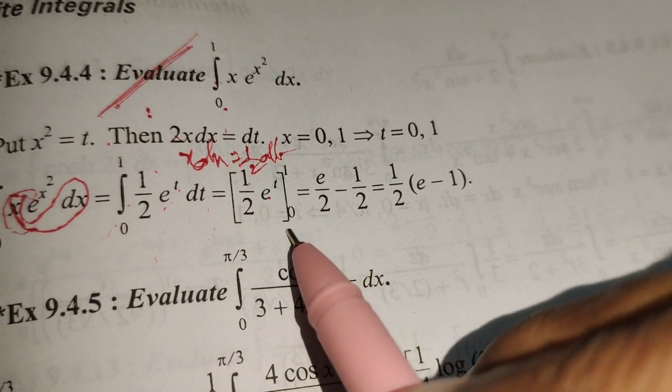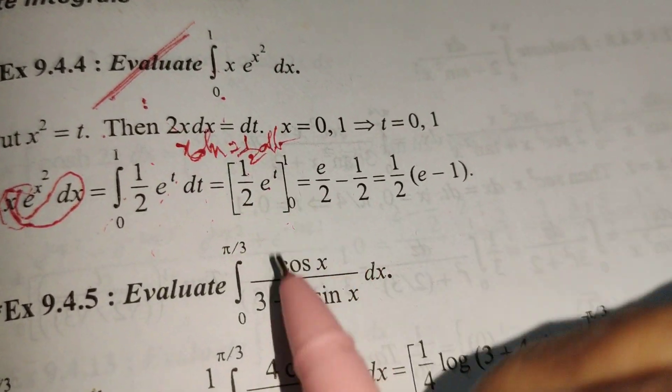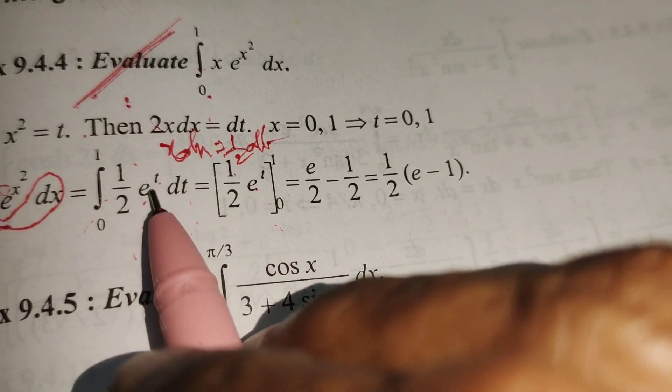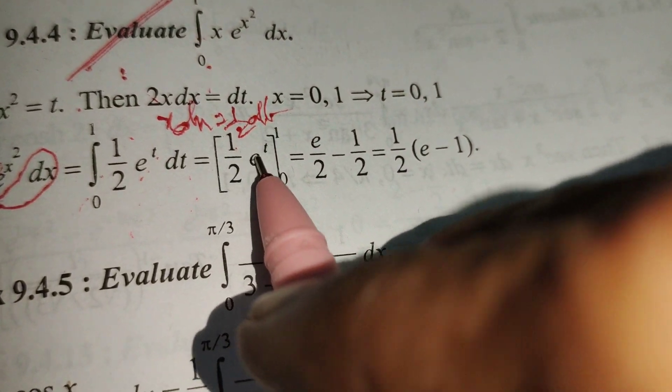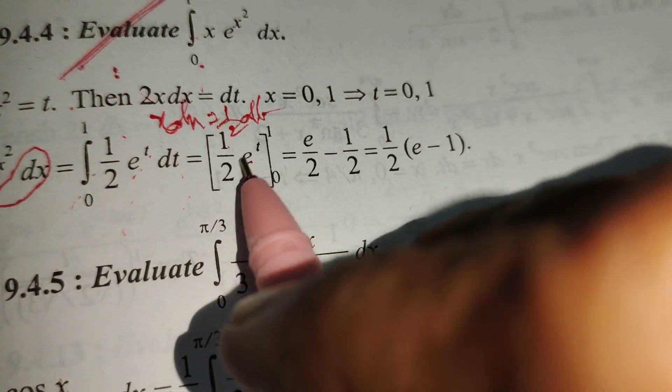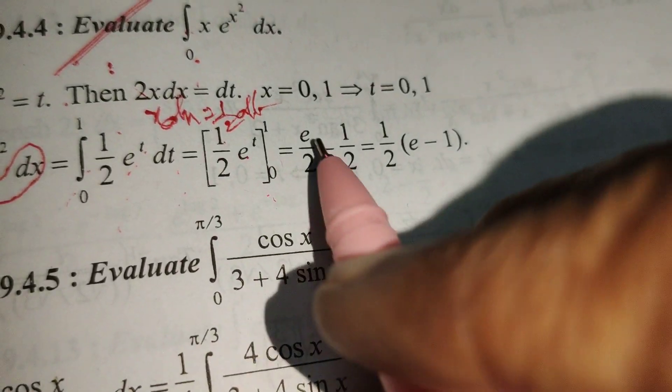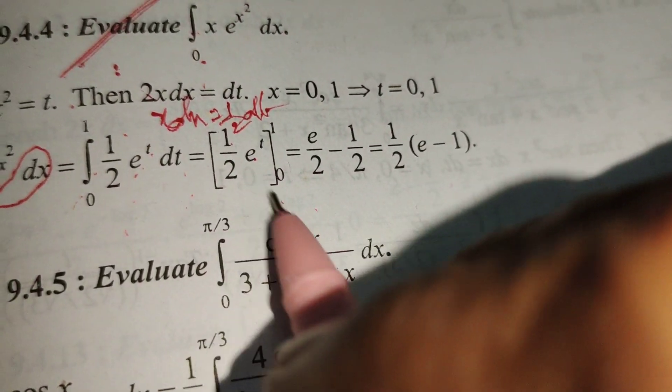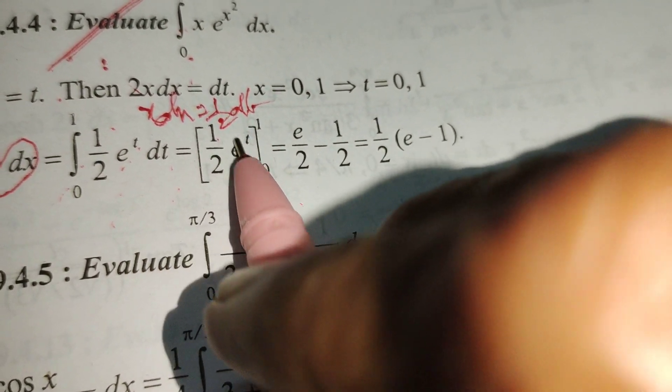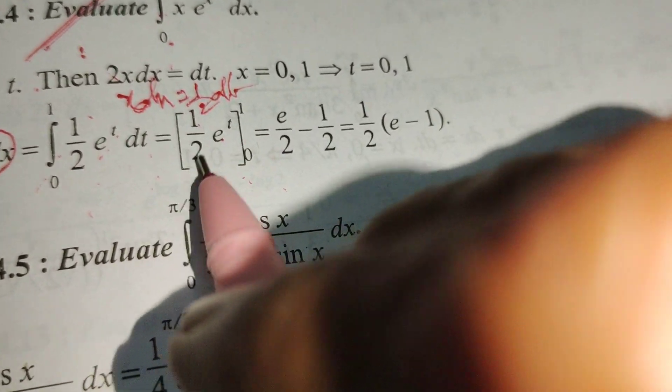Then substitute the limits 0 to 1 in place of t. First substitute the upper limit: e^1, that is e/2. Then minus the lower limit substitution: e^0/2.